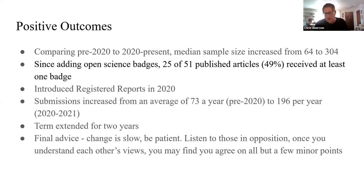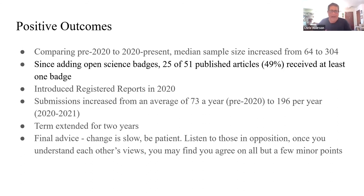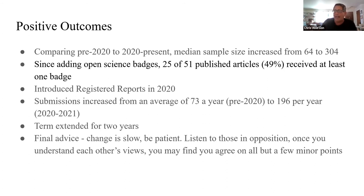So where have we ended up? Comparing pre-2020 to 2020 and later — about the time where badges became available for the whole year — the median sample size increased substantially from 64 to 304. A lot of that is my own focus on statistical power. Since adding open science badges, about half of the articles we publish have received at least one badge, trending closer to 60–70% for more recent submissions. We've also been able to introduce registered reports, and our submissions have increased dramatically, from an average of 73 a year to about 200 per year.